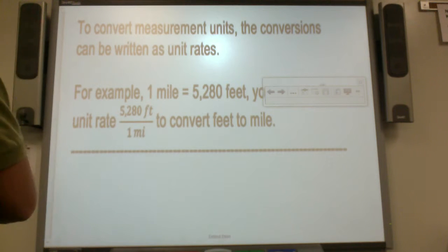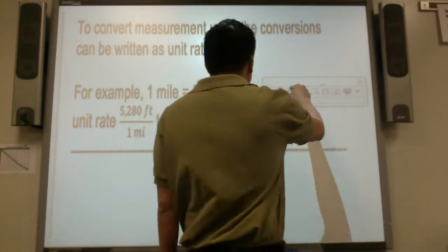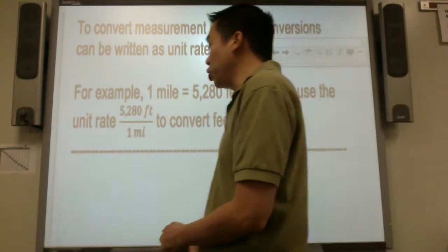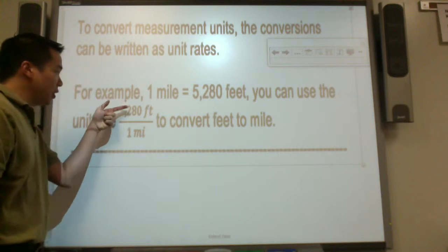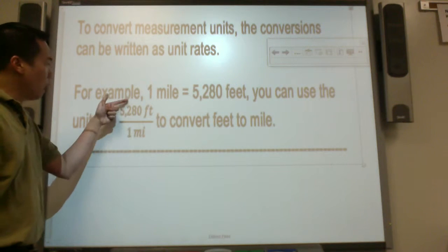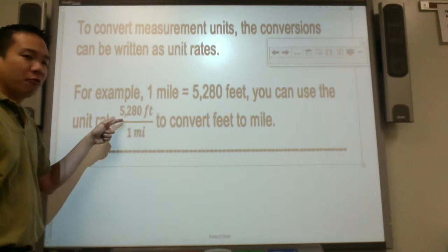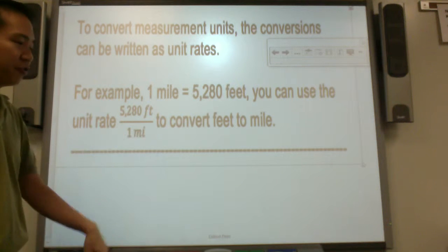To convert measurement units, the conversions can be written as unit rates. For example, one mile has 5,280 feet. You can use the unit rate of 5,280 feet per mile or 5,280 feet for every one mile to convert feet to miles.